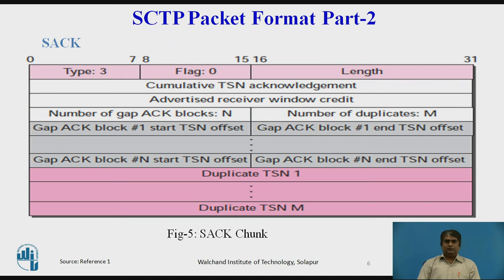Selective Acknowledgement (SACK) chunk acknowledges the receipt of data packets. The format of the SACK chunk is shown in the figure. The common fields are the same as discussed previously. The type field has value 3 and the flag bits are set to 0. Cumulative TSN Acknowledgement: This 32-bit field defines the TSN of the last data chunk received in sequence. Advertised Receiver Window Credit: This 32-bit field is the updated value for receiver window size. Number of Gap ACK Blocks: This 16-bit field defines the number of gaps in the data chunks received after the cumulative TSN. Number of Duplicates: This 16-bit field defines the number of duplicate chunks following the cumulative TSN.